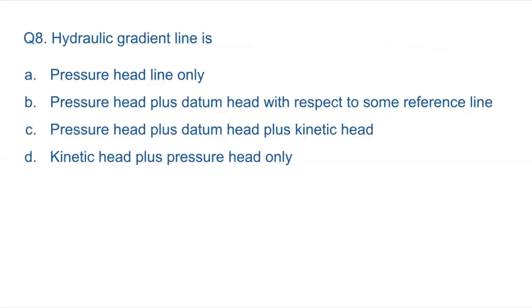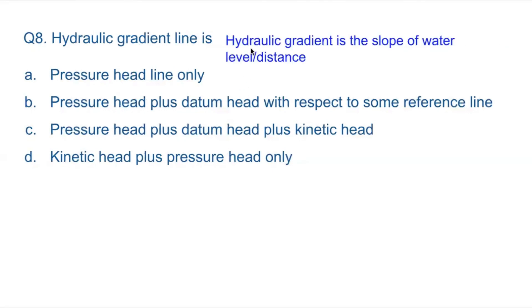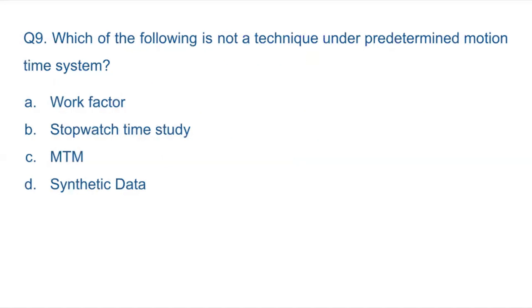Question 8: Hydraulic gradient line — hydraulic gradient is the slope of water level divided by distance. The hydraulic gradient line is: pressure head plus datum head with respect to some reference line. Answer: B — pressure head plus datum head with respect to some reference line, because the slope is always measured with respect to some reference line.